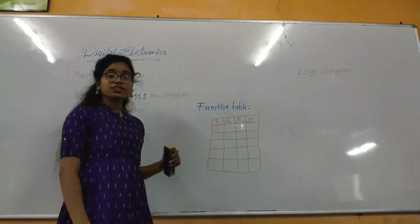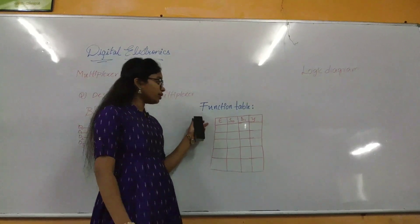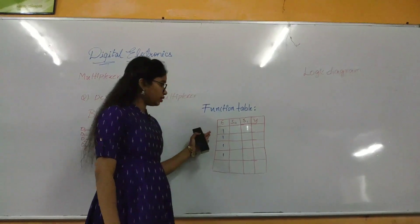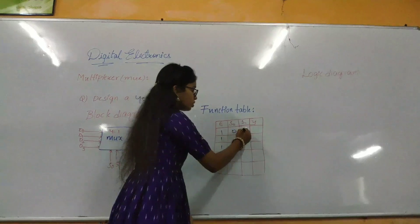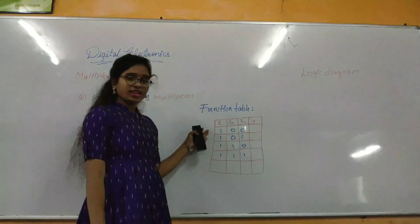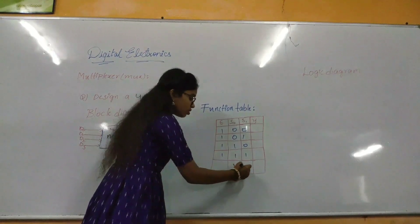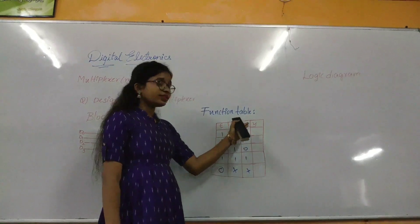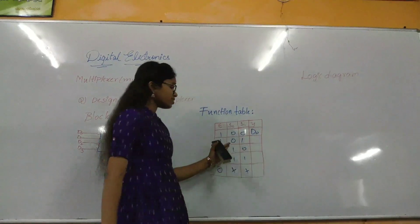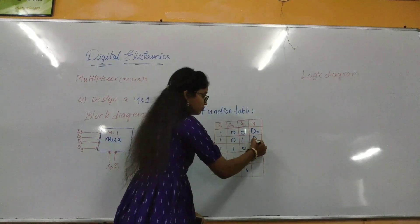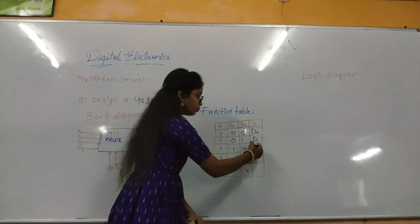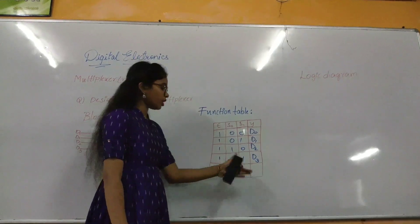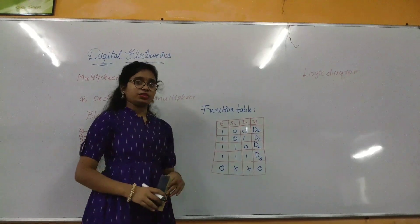Now let us look at the function table for the 4-by-1 multiplexer. It has an enable input, 2 selection lines, and an output line. When enable is 1, the selection lines S1 S0 can be 00, 01, 10, or 11, giving outputs D0, D1, D2, and D3 respectively. When the enable input is 0, the selection lines are don't-care and the output is 0 — meaning there is no output when enable is 0.